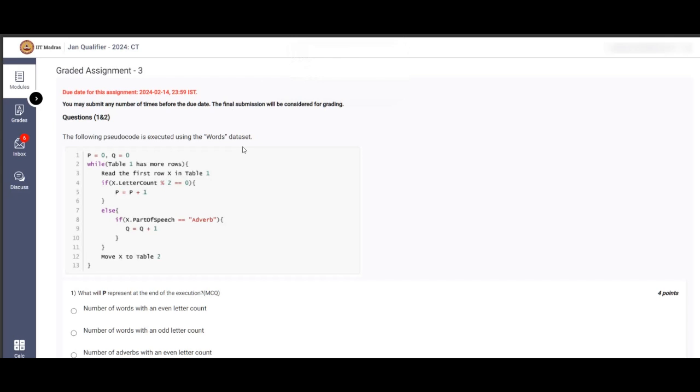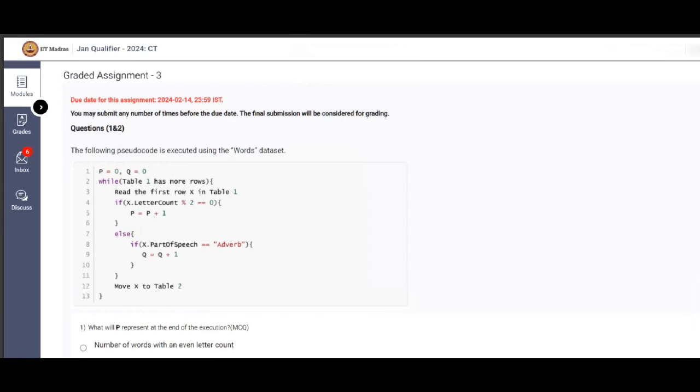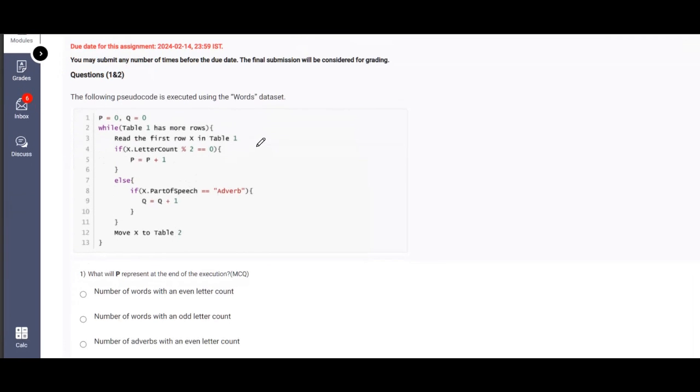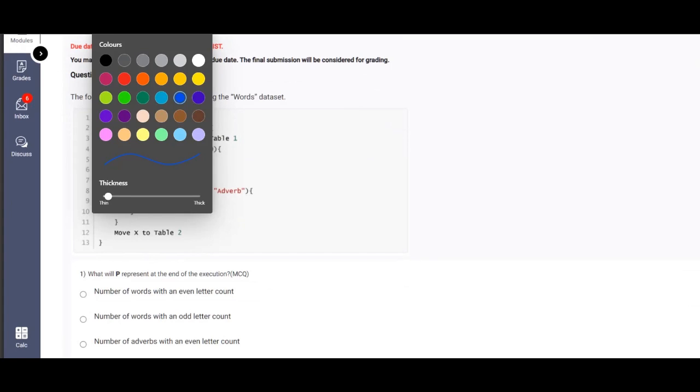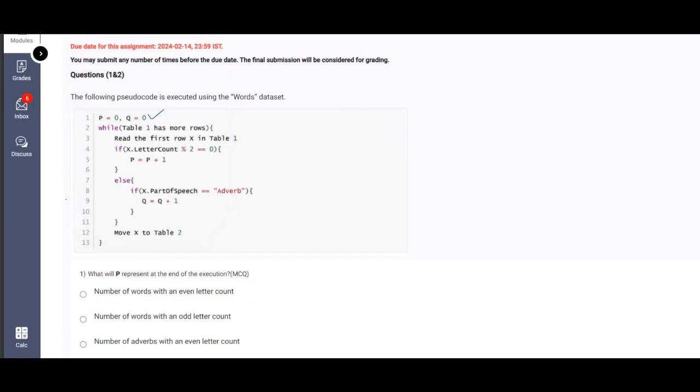So this is the very first question. If you look at it, P is zero and Q is zero, both are zeros. Please note this point. It is being executed using a data set where P equals zero and Q equals zero.